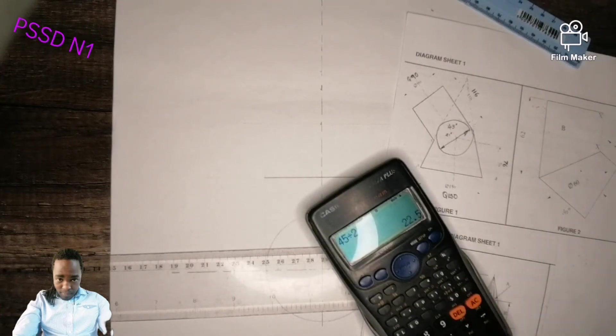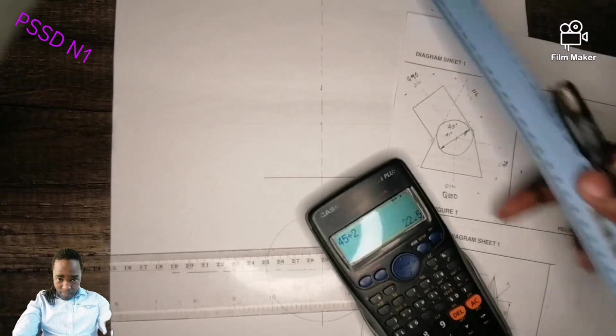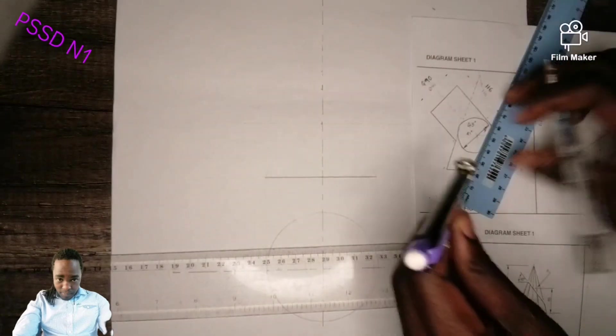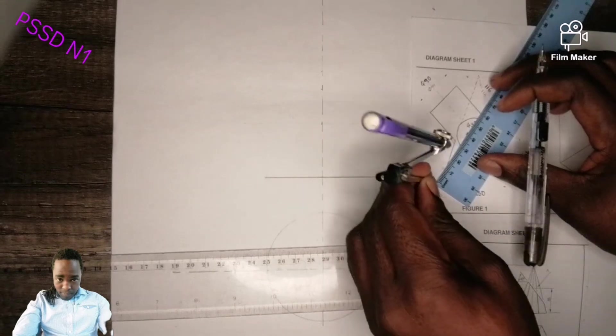So you open your compass to 22.5. This is 20, 21, 22. The point 5 is between 22 and 23.